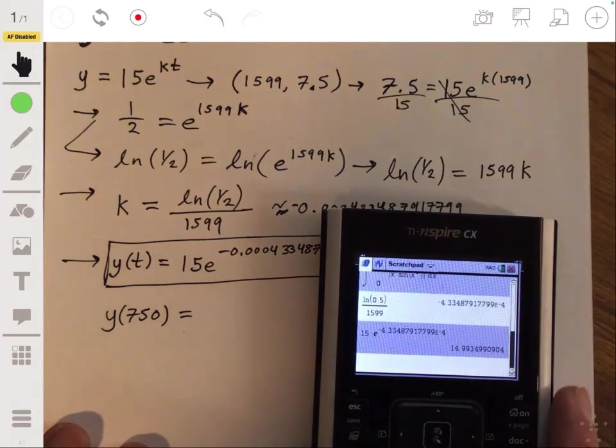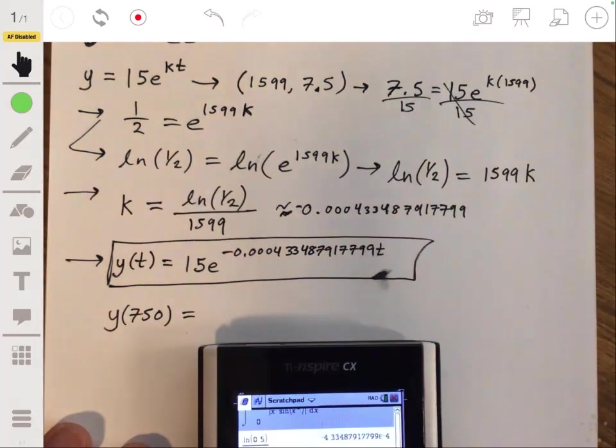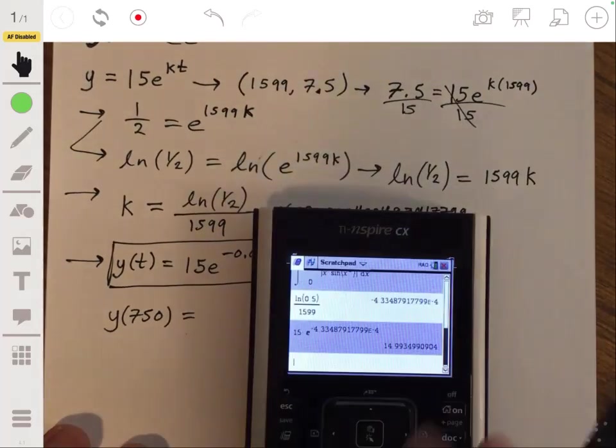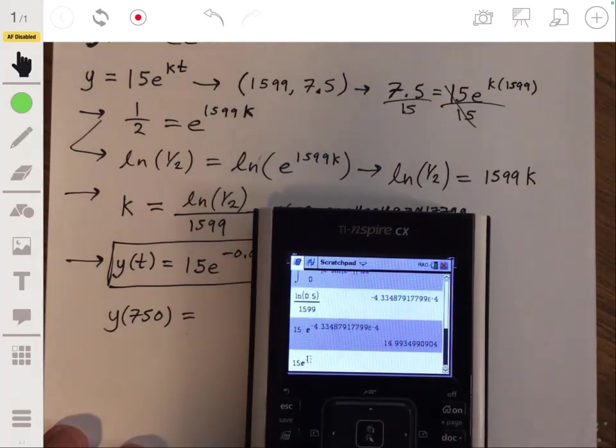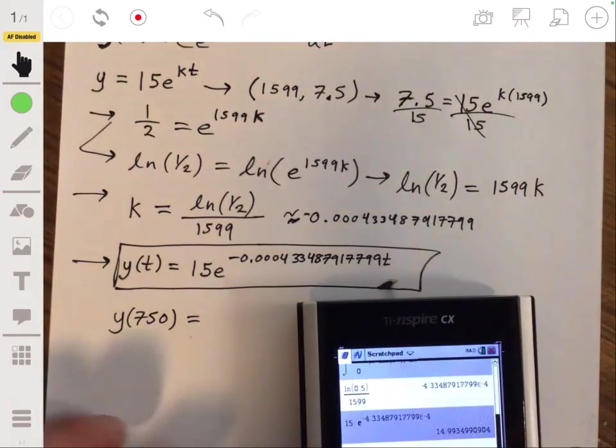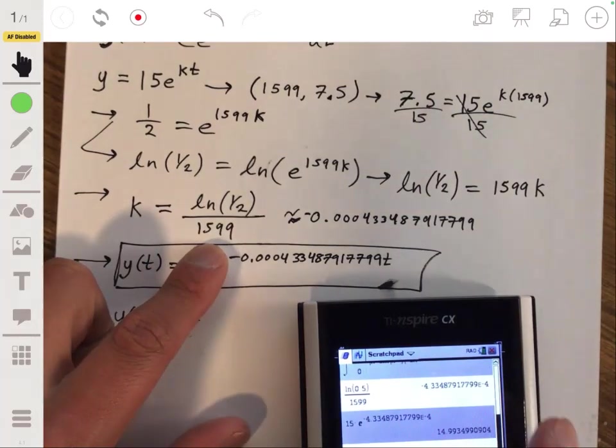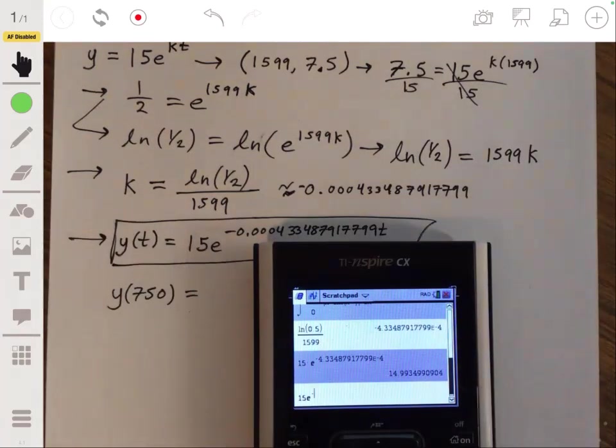Oh, I forgot to multiply this by 750. That was pointless. Let me put that back in there. E to the negative. I actually entered that wrong too. I forgot to put the... well, no, actually I didn't enter it wrong.